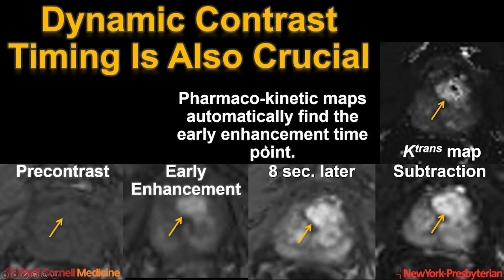Similarly, dynamic contrast timing is crucial. Here is a pre-contrast image of the prostate where you can see that it's uniformly T1 hypointense. At the early enhancement time point, you can see that there is focal early enhancement. But eight seconds later, this is nearly entirely obscured, even on a subtraction map. Of note, the K-trans map, the pharmacokinetic map of wash-in, also identifies this area as early enhancement, which can be very useful.